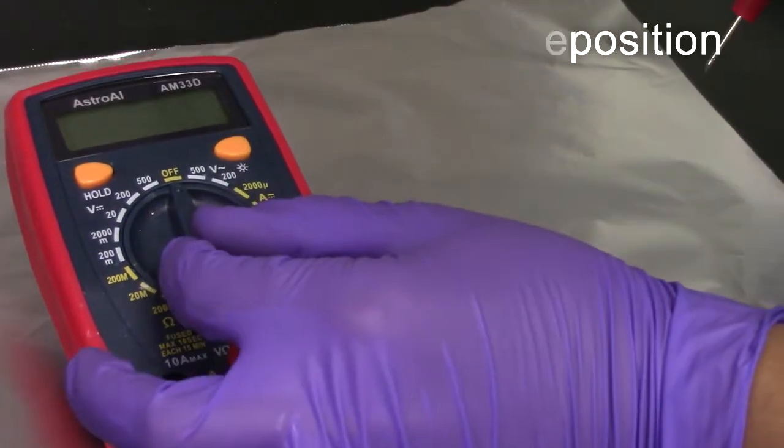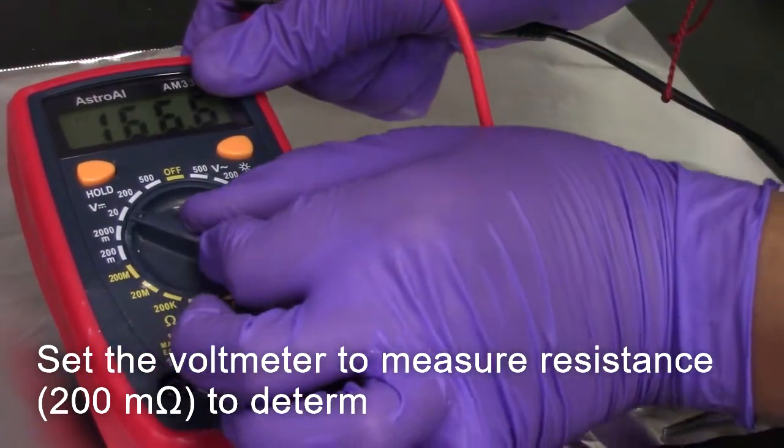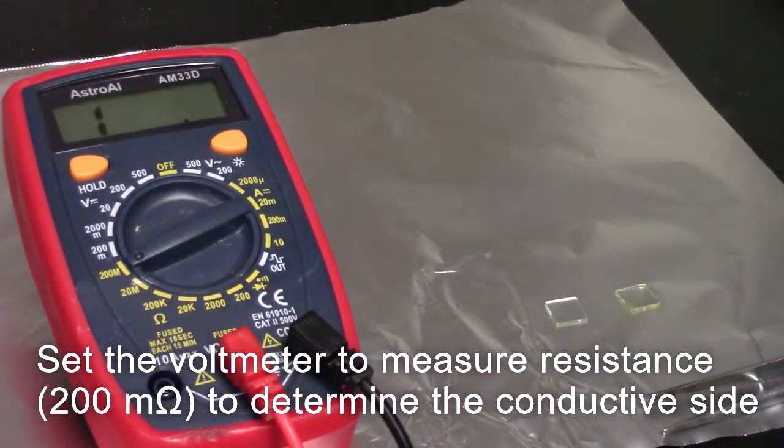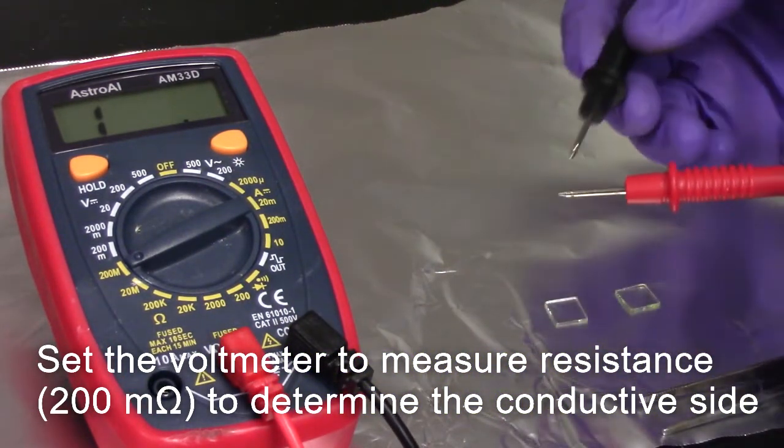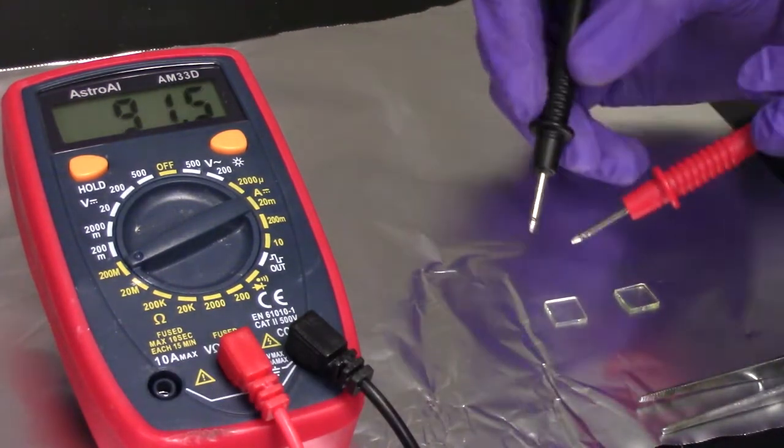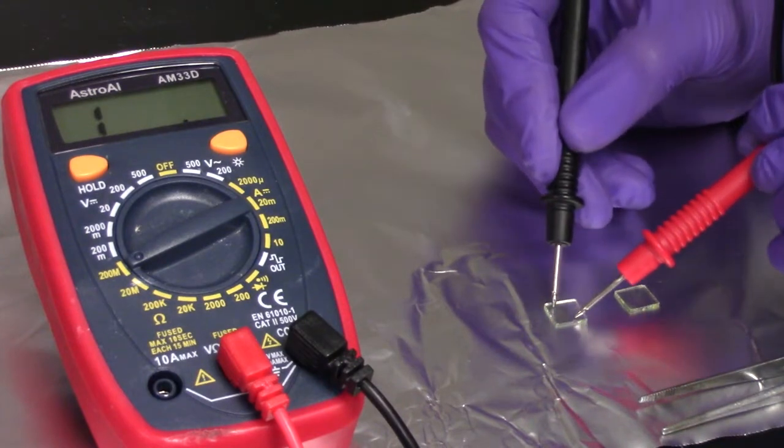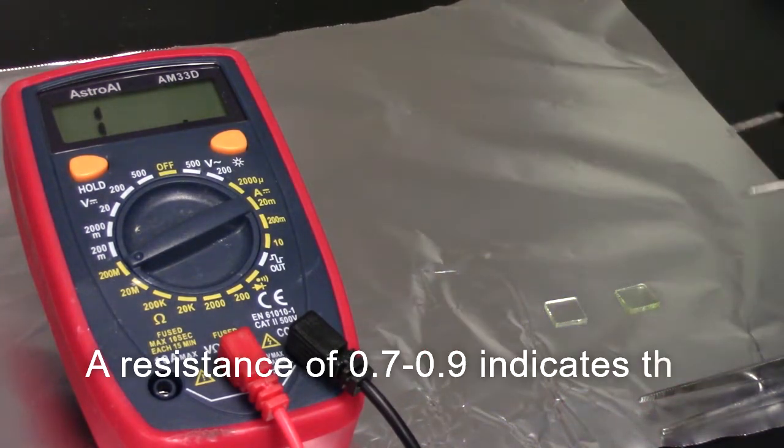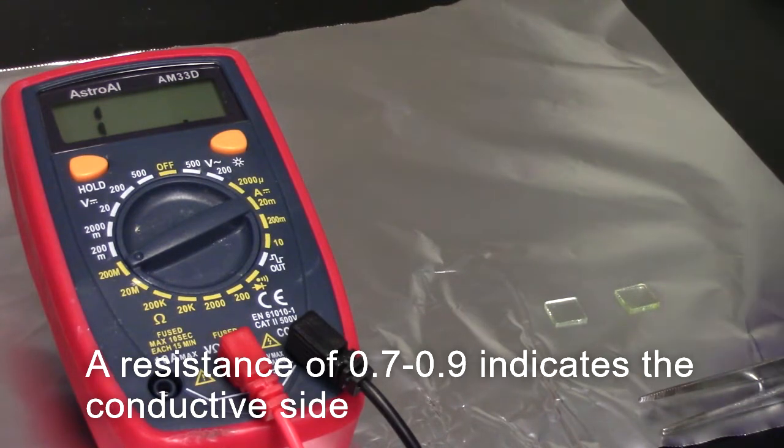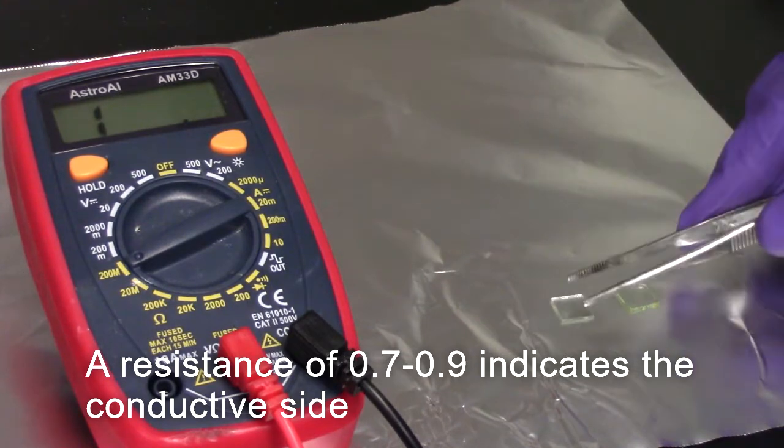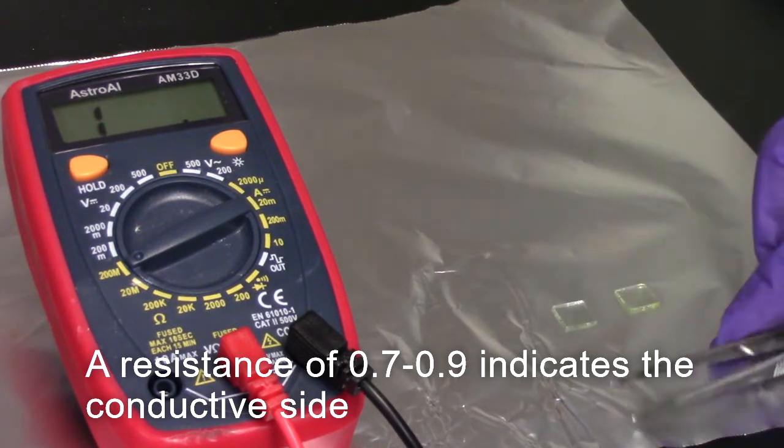Before preparing the cathode or the anode, we must determine the conductive side of the ITO glass. Begin by setting the voltometer to measure resistance at about 200 milliohms. Test each respective side of the conductive glass. There is no measure for resistance, thus we will flip the glass. A resistance measure of 0.7 to 0.9 indicates the conductive side.